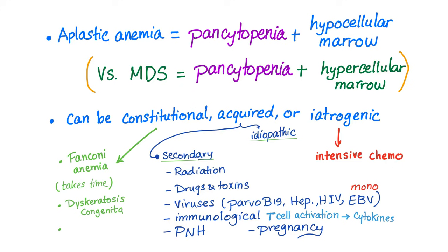Acquired causes can be idiopathic, which means we don't know. Or secondary — secondary to radiation, big time. Drugs and toxins, such as alkylating agents, anti-metabolites, anti-mitotics, some antibiotics, anti-epileptics such as phenytoin and carbamazepine, sulfa drugs, chlorpromazine, non-steroidals, nifedipine which is a calcium channel blocker.